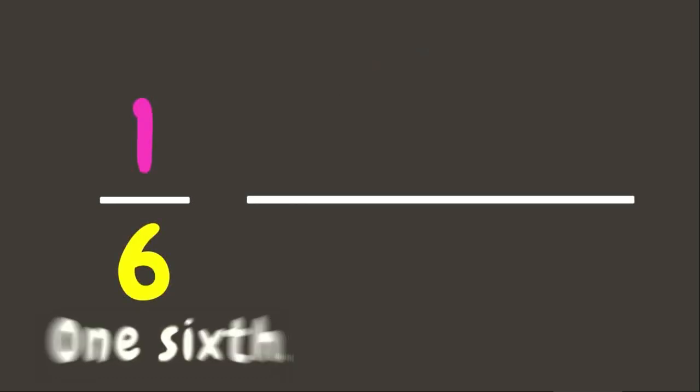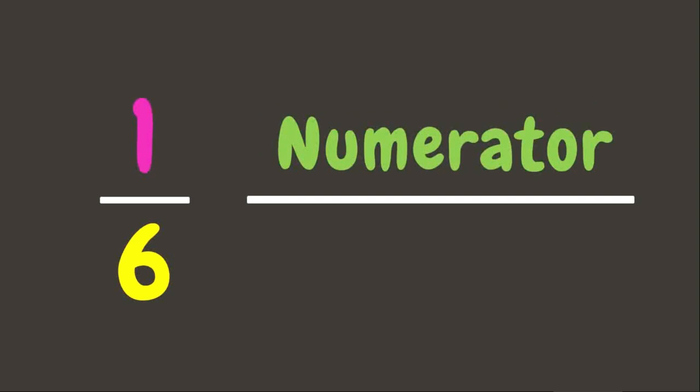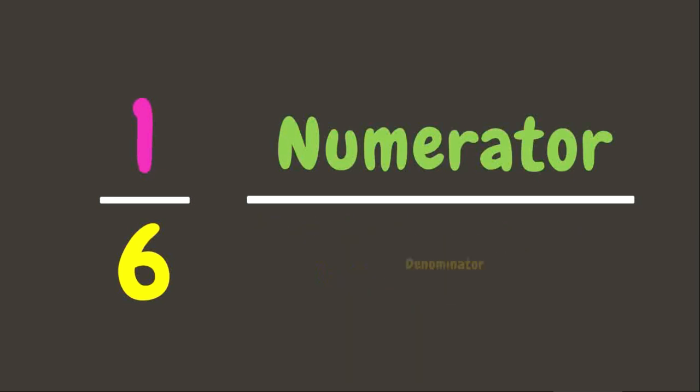The number above the line is the number of parts taken from a whole, or numerator. The number below the line is the total number of equal parts in a whole, or what we call denominator.